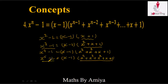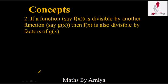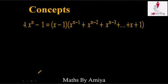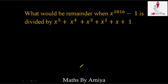Today we have learned 4 concepts: Concept 1 for numbers, Concept 2 for functions, Concept 3 on how to find remainders for a function, and Concept 4 on the factorization of the x^n - 1 term. These 4 are the basic concepts for this question. Our question is: what would be the remainder when x raised to power 2016 minus 1 is divided by this polynomial?